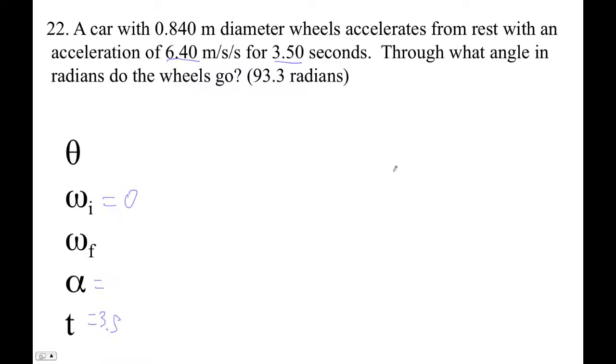And then we can find the angular acceleration because remember, a equals alpha r, therefore alpha is a over r, right? So it's 6.4 divided by—and that's the diameter, so radius is 0.420, right? So I'm going to do that: 6.4 divided by 0.42 equals 15.238 radians per second squared is my acceleration.